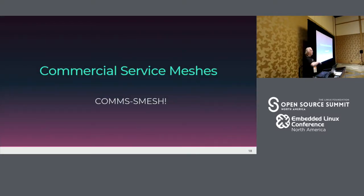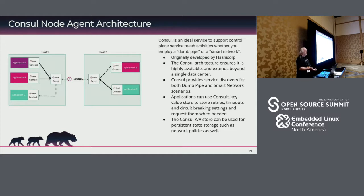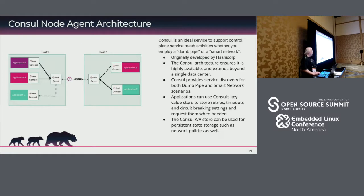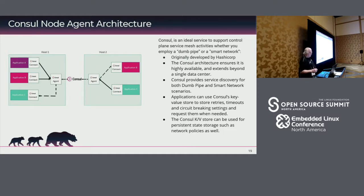Now let's take a look at some of the commercial offerings. Consul, which was one of the originators, was originally developed by HashiCorp around the same time they developed Vault as the key service. The idea was to be able to take any kind of pipe without building your intelligence into your physical network — no need for Cisco ACI or Arista. You can do most of what you need, from shaping traffic to setting encryption policies to circuit breaker patterning, all through Consul without building it into your network.